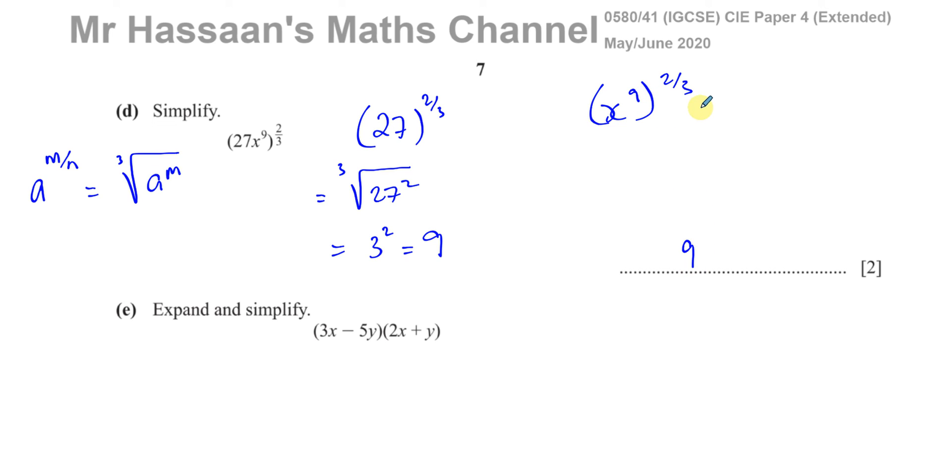And then the letter part, I like to use the fact that when you have a to the power of m to the power of n, when you raise something which is raised to a power to another power, you multiply those powers together. So this will be a to the power of m times n. So this will be X to the power of 9 times 2 over 3. When you multiply 9 and 2 thirds, this is like 9 over 1 times 2 over 3, they cancel out, and you're left with 3 times 2 which is 6. So you're left with X to the power of 6. So 9X to the power of 6 is our final answer.